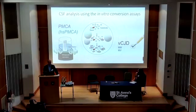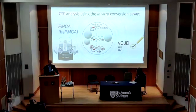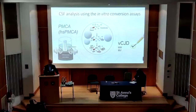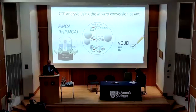There is another conversion assay — an older technique called PMCA. We've recently modified this technique by making certain changes, and we've got it to a sensitivity where we can detect variant CJD in cerebrospinal fluid samples, both from the MM cases and from the very rare MV cases. It works on a slightly different principle: rather than shaking the samples, we subject them to ultrasound. But for unknown reasons, this is simply a better technique for detecting variant CJD.